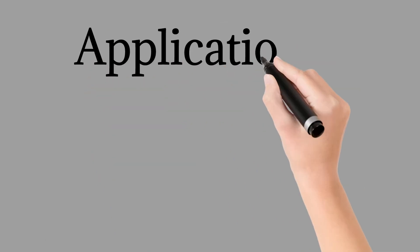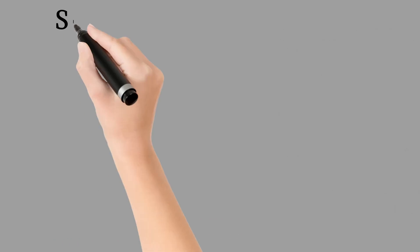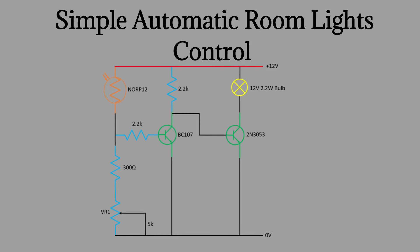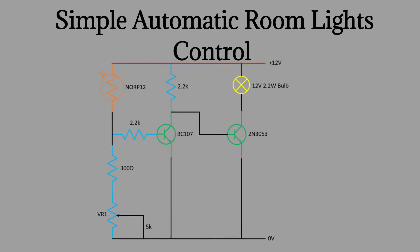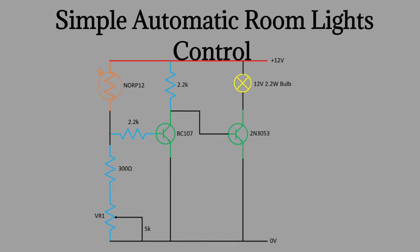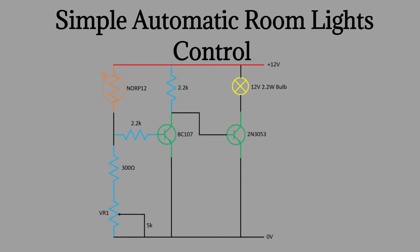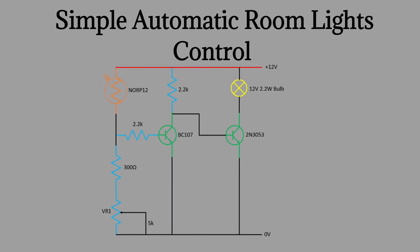Applications: you can find an LDR in various circuits. Simple automatic room light control: in this circuit, the LDR is responsible for detecting light. Whenever light falls on the LDR, the resistance decreases and transistor BC-107 turns on. Due to this, the transistor collector goes low, which turns off transistor 2N3053. In darkness, the collector of BC-107 goes high, causing transistor 2N3053 to turn on and turn on the bulb. The above circuit can control room lights.